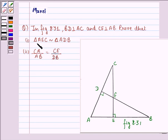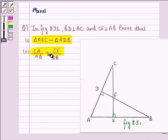Prove that first, triangle AEC is similar to triangle ADB, and second, CA divided by AB is equal to CE divided by DB. So in this question we need to prove two things.